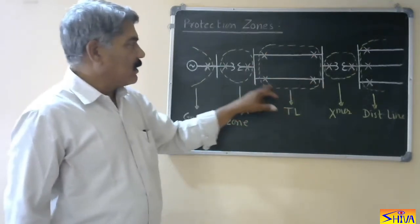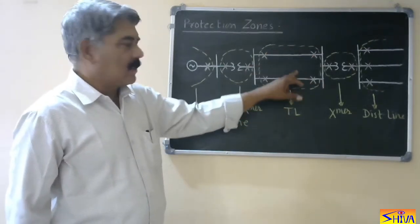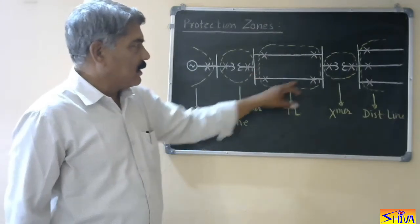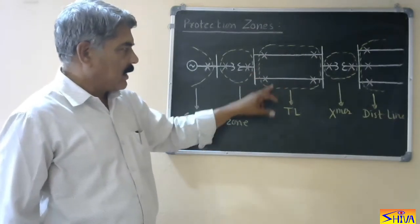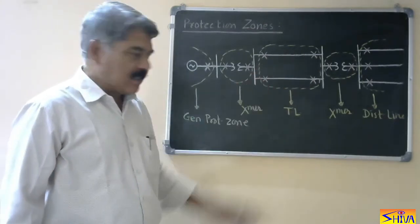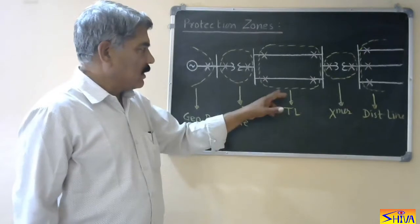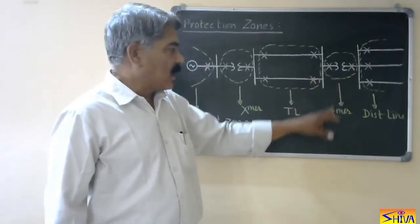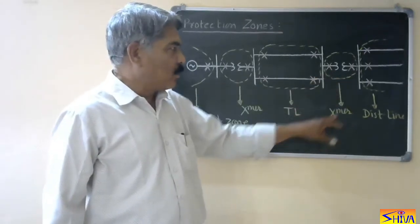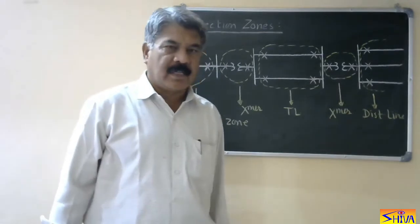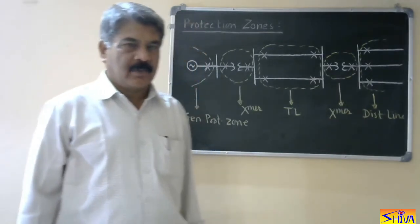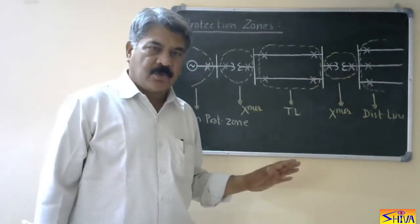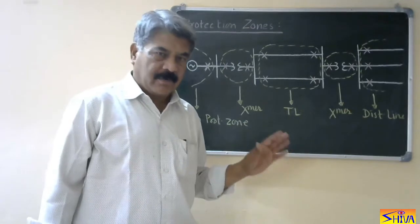This part of the power system consists of the transmission line, protected by these relays and circuit breakers — a protective scheme. This is the transmission line protection zone. This is the transformer protection zone and this is the distribution line protection zone. So these are the different protection zones of a power system.